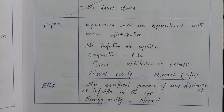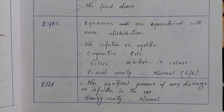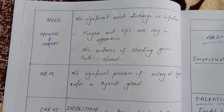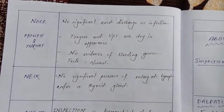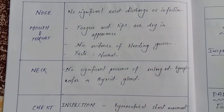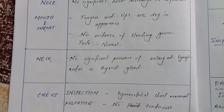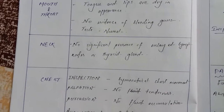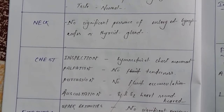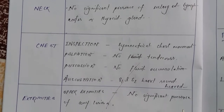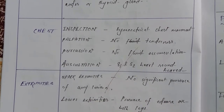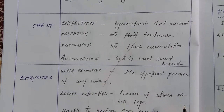Ear: no significant discharge or infection, hearing acuity normal. Nose: no significant nasal discharge or infection. Tongue and lips are dry, no evidence of bleeding gums, taste normal. Neck: no enlarged lymph nodes or thyroid gland. Chest: symmetrical chest movement, palpation no tenderness, percussion no fluid accumulation.